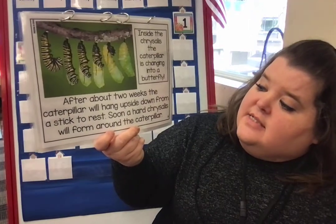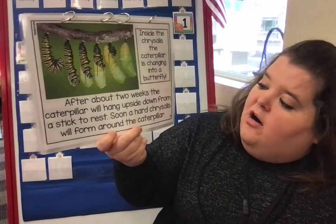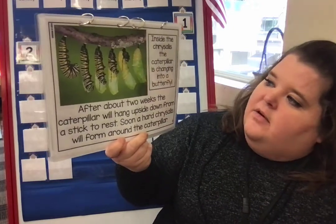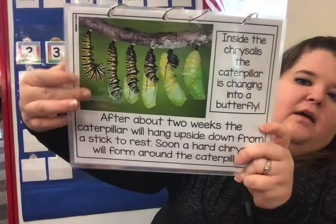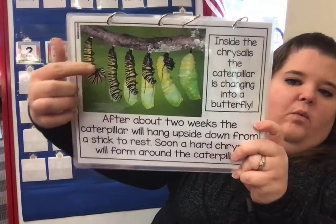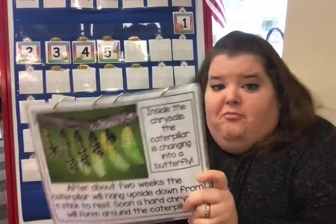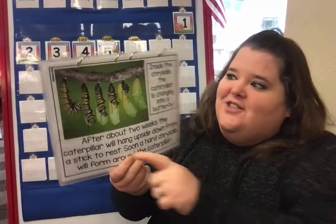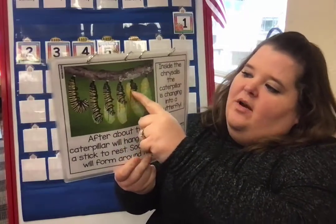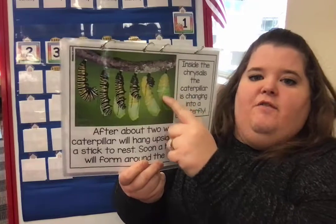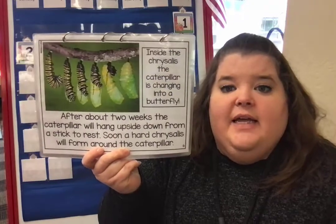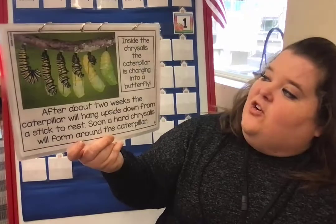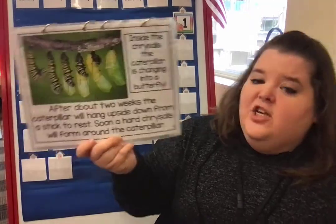After about two weeks, the caterpillar will hang upside down from a stick or a branch, and soon a hard chrysalis will form around the caterpillar. As the caterpillar is hanging there, it sheds its skin again and the skin wiggles up to the top until it falls off, and we just have the chrysalis hanging there. I'll have to find a video of this happening and post it on our Facebook — it's really cool to watch.